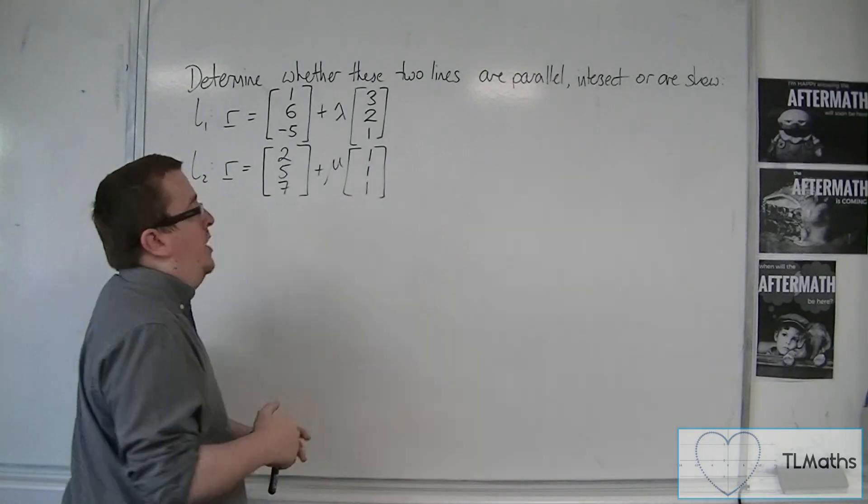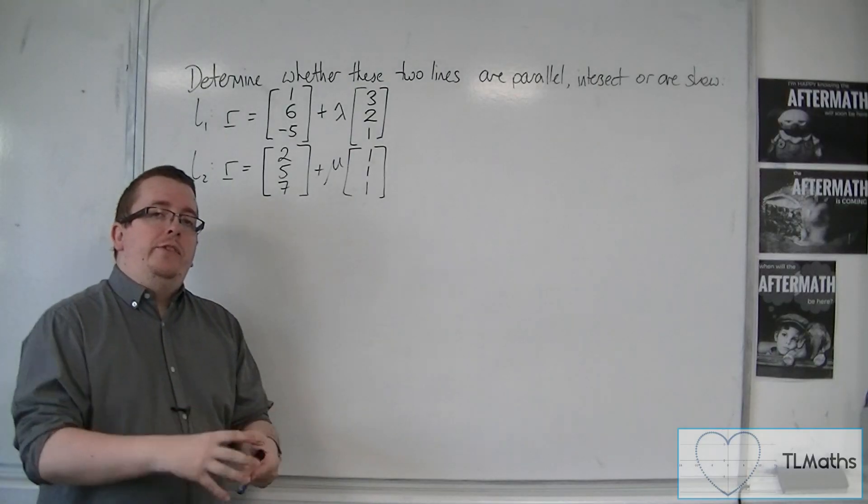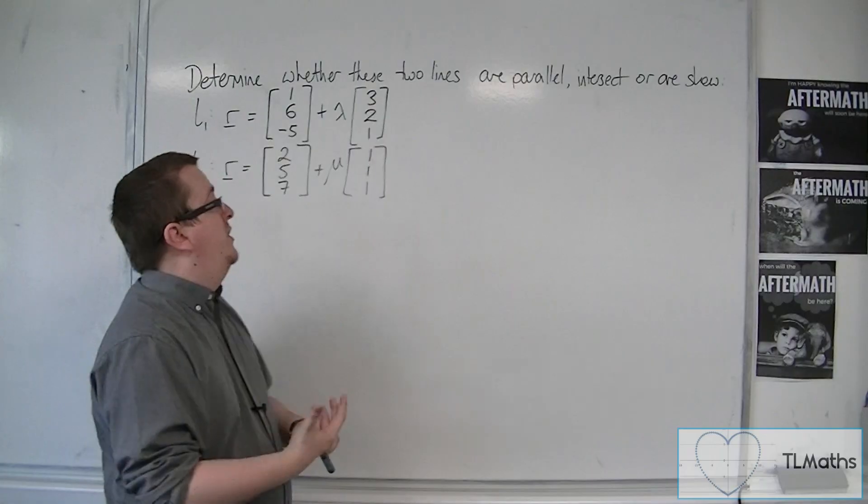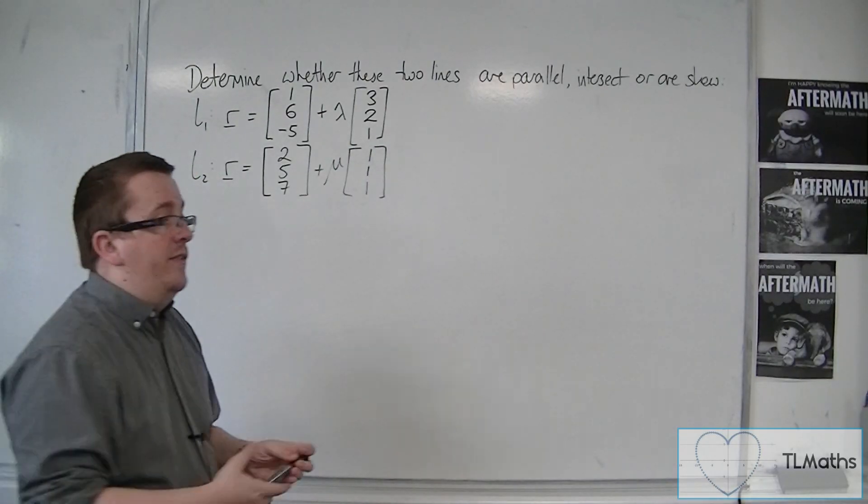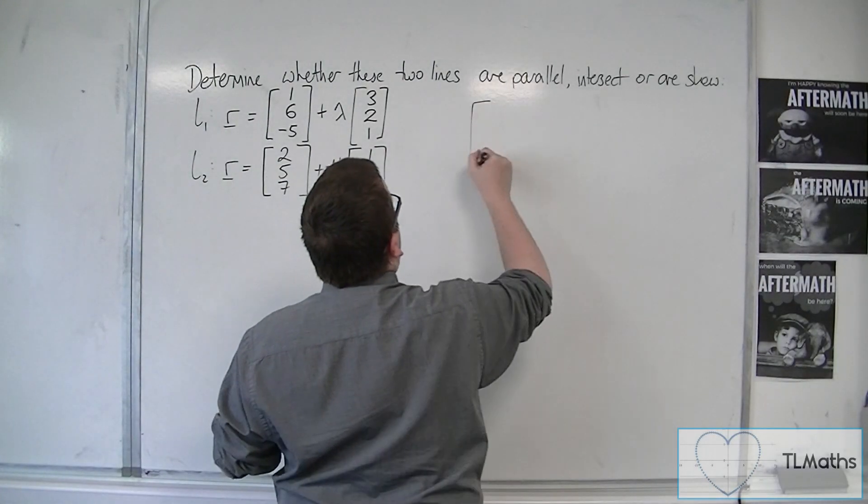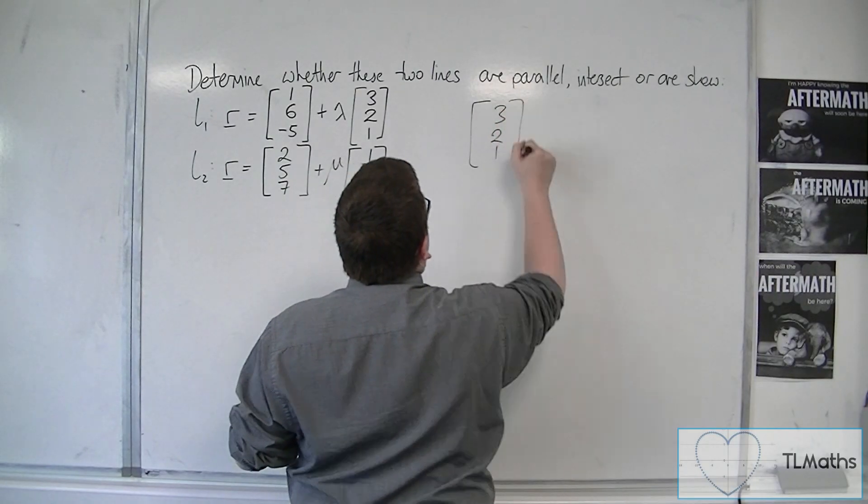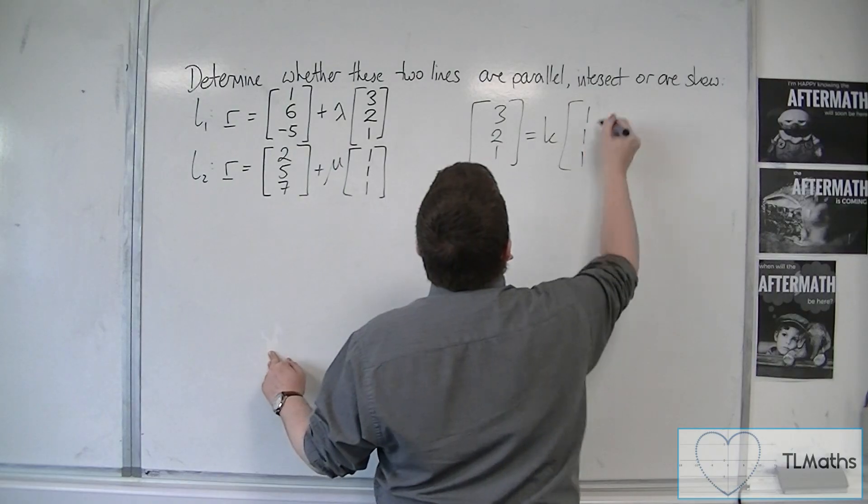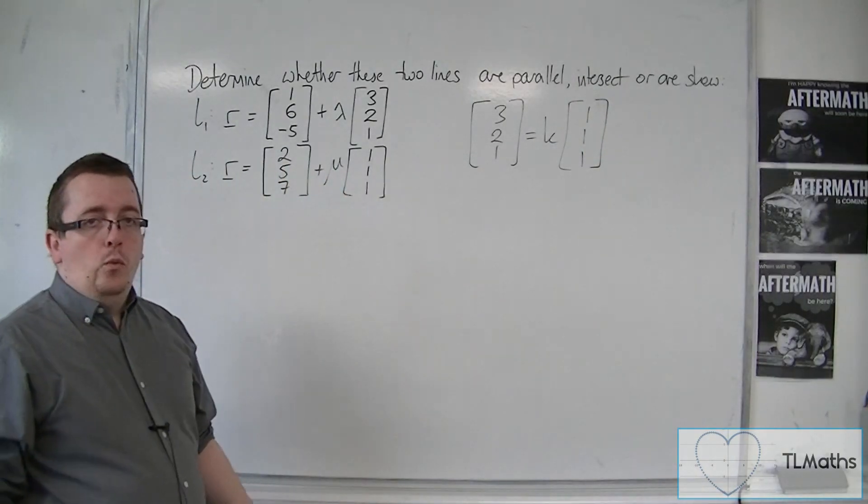So the first thing to check is whether the direction vectors are the same. They're clearly not. And we also need to determine is one a multiple of the other. So is there a value of k such that 3, 2, 1 is equal to k lots of 1, 1, 1?